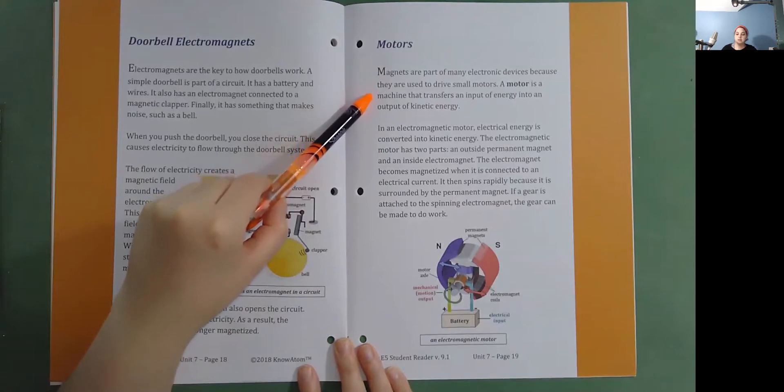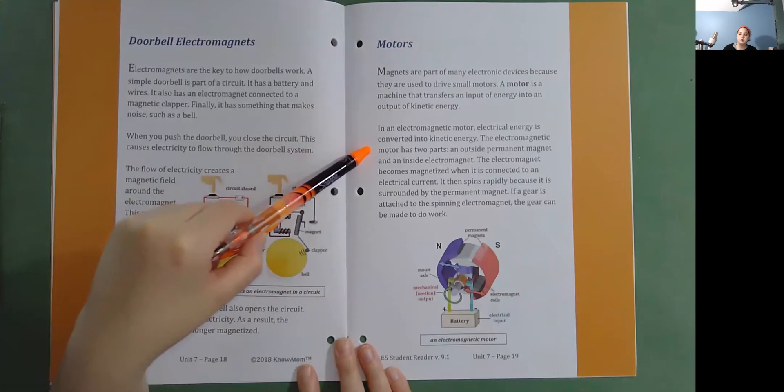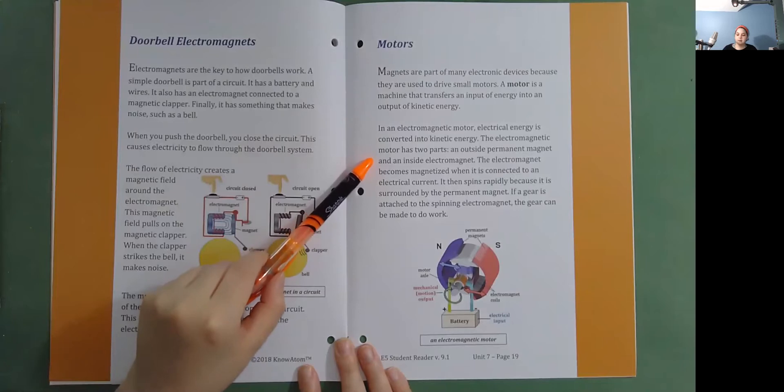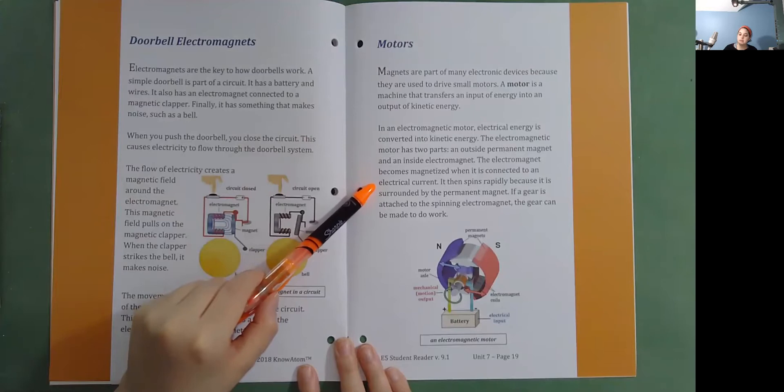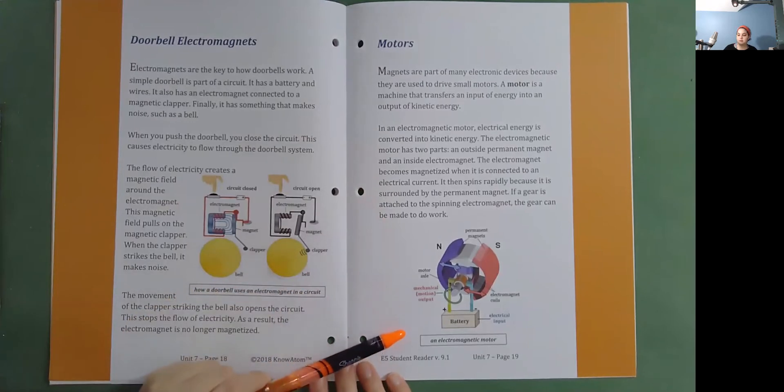A motor is a machine that transfers an input of energy into an output of kinetic energy. In an electromagnetic motor, electrical energy is converted into kinetic energy. The electromagnetic motor has two parts: an outside permanent magnet and an inside electromagnet. The electromagnet becomes magnetized when it is connected to an electrical current. It then spins rapidly because it is surrounded by the permanent magnet. If a gear is attached to the spinning electromagnet, the gear can be made to do work. An electromagnetic motor.